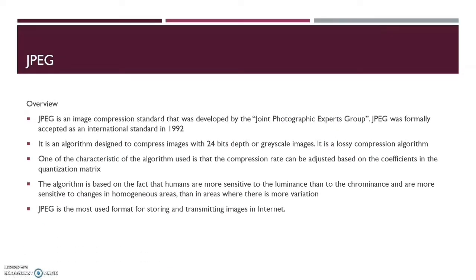JPEG is an image compression standard developed by the Joint Photographic Experts Group, formally accepted as an international standard in 1992. It is an algorithm designed to compress images with 24-bit depth or grayscale images. It is a lossy algorithm whose compression rate can be adjusted based on the coefficient of the quantization matrix. The algorithm is based on the fact that humans are more sensitive to luminance — the brightness of the pixel — rather than chrominance, the color, and are more sensitive to changes in homogenous areas than in areas with more variation. JPEG is the most used format for storing and transmitting images across the internet.